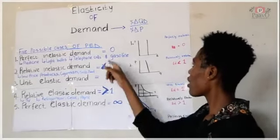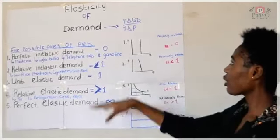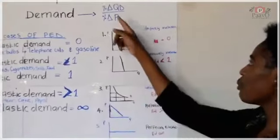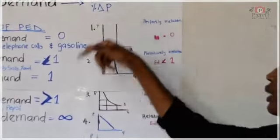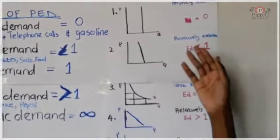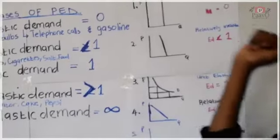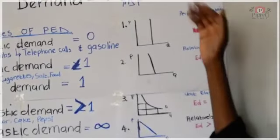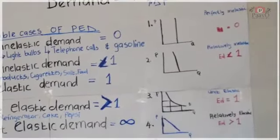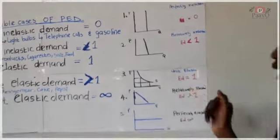The coefficient is calculated as the percentage change in quantity demanded divided by the percentage change in price — that gives you the coefficient of demand.